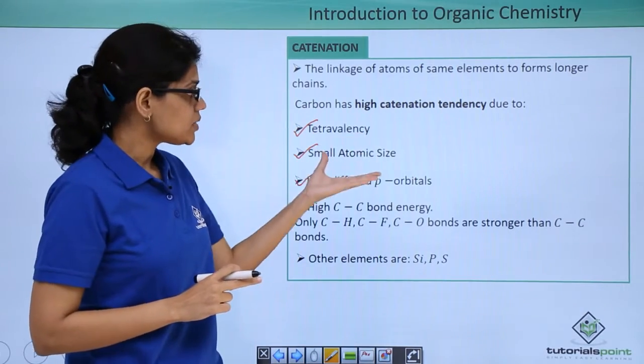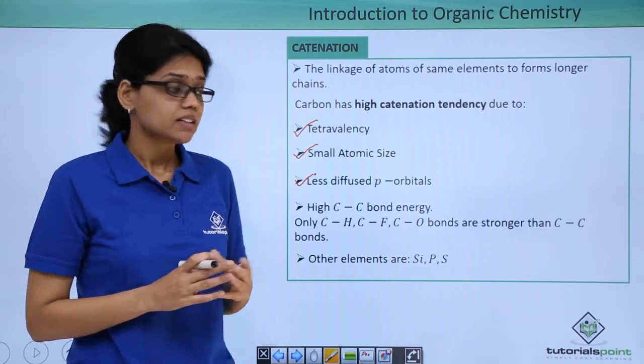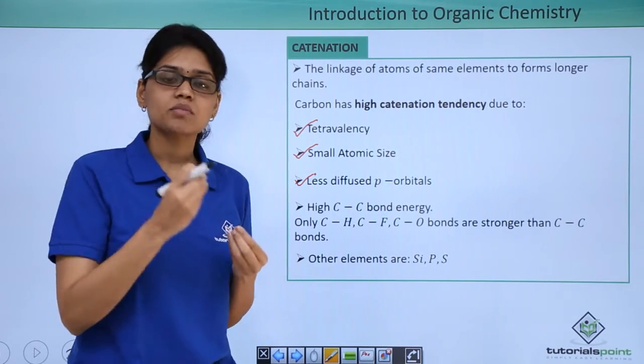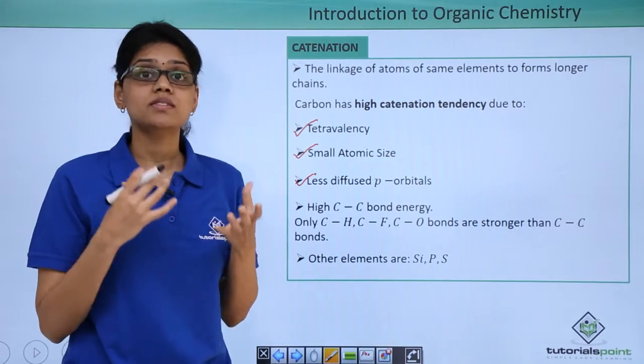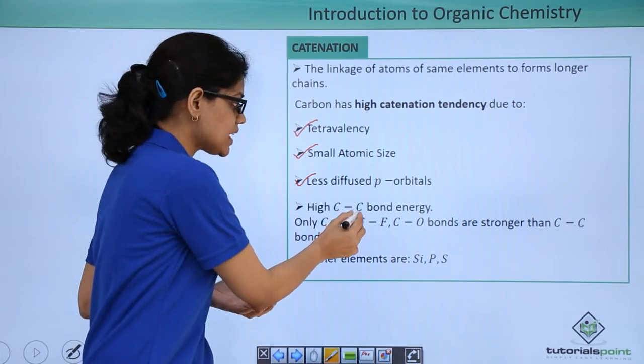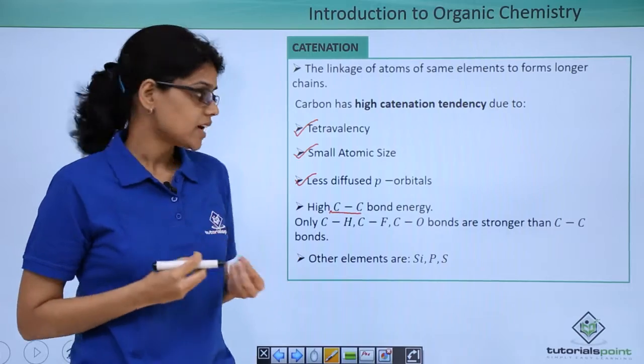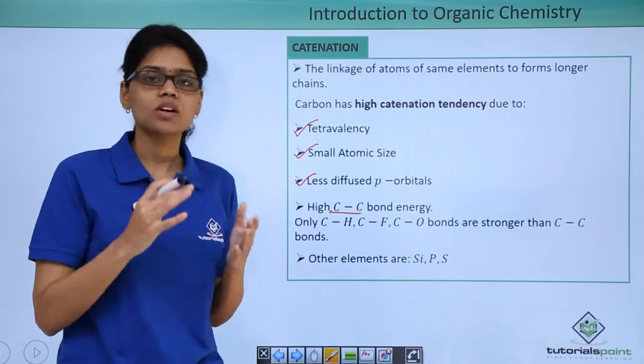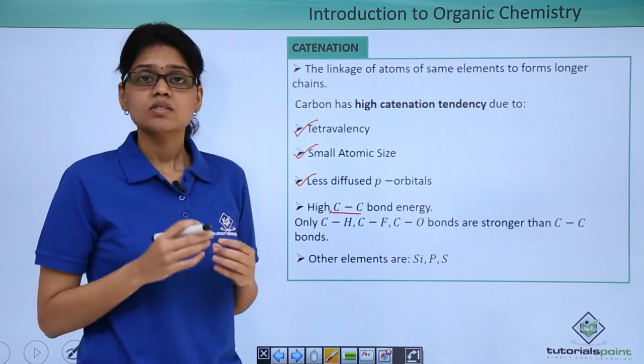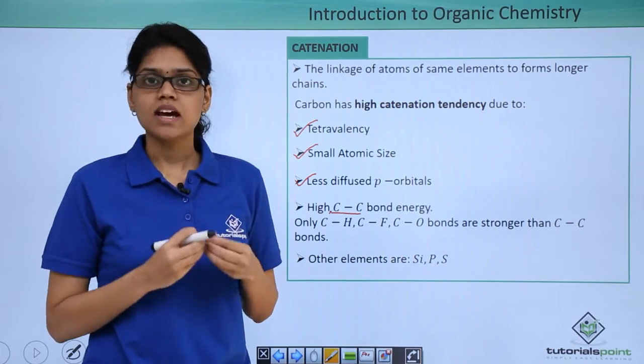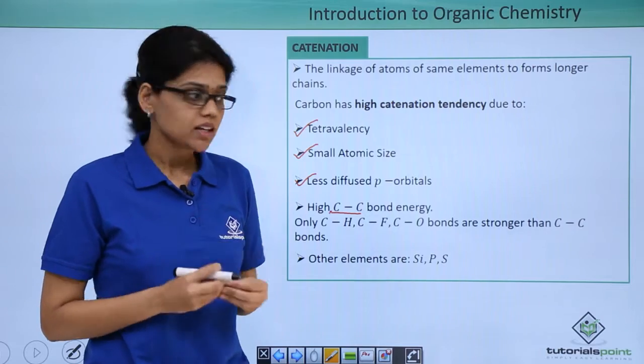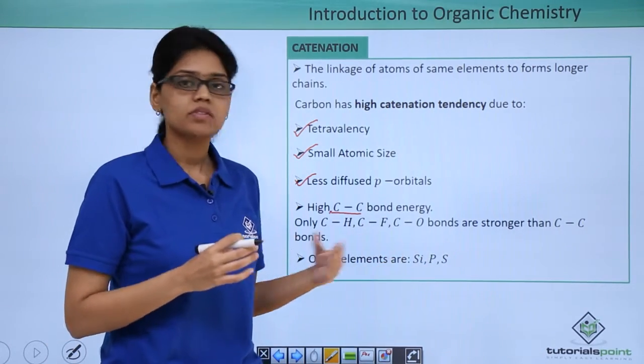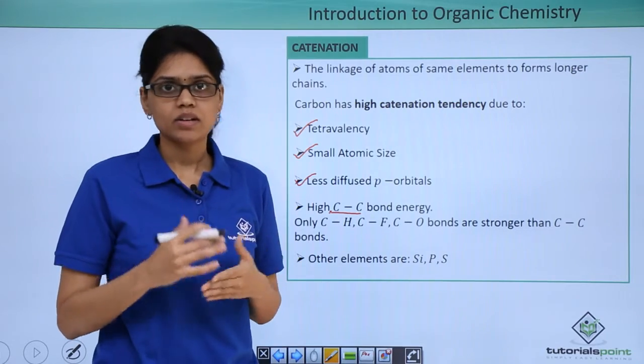After examining the first three points, we can definitely say that C-C bond formation is highly favored. That is, C-C bond is very stable. If a bond is very stable, it means that it has very high bond energy. In fact, only C-H, C-F, and C-O bonds are actually stronger than C-C bonds. There are also other elements that actually exhibit catenation tendency, and they are silicon, phosphorus, and sulphur, the details about which we will study in inorganic chapters.